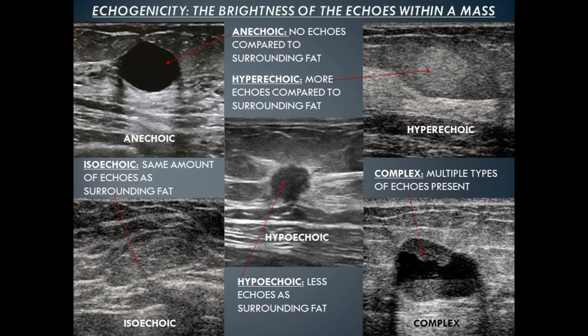This is a complex mass. There are multiple types of echoes present: brighter echoes, darker echoes, and black echoes. The black portions indicate fluid, so we know parts of it are cystic, and the non-black portions are solid material, confirming this mass has both cystic and solid components.